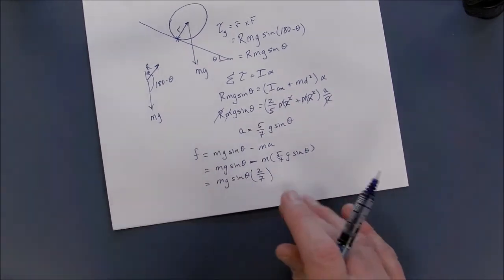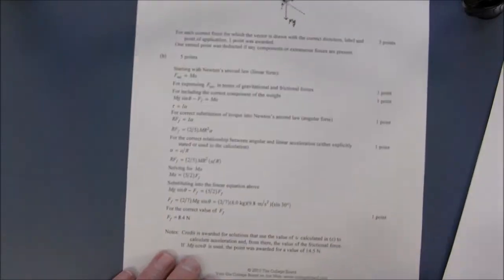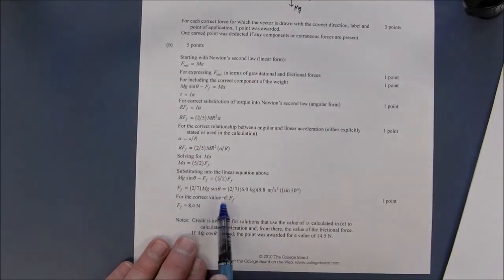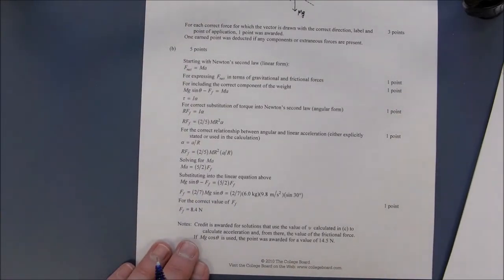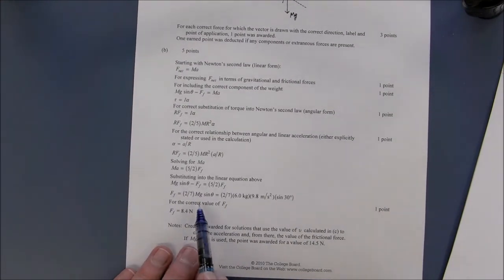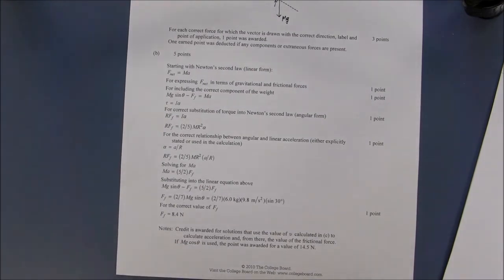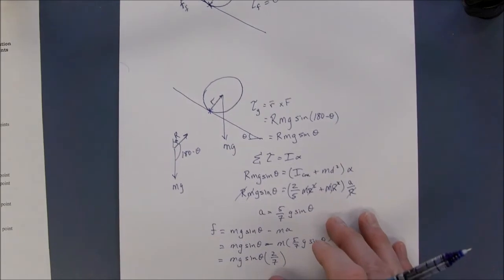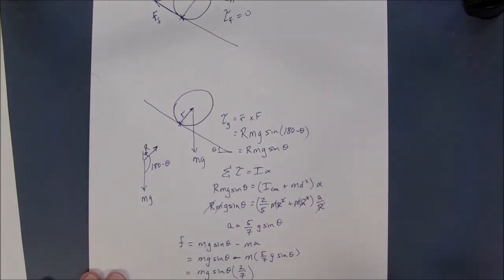And that is the same answer that they got using the wrong way of calculating the torque with the force of friction. So I just have issue with the fact that they didn't use the actual pivot, and they used the center of mass as the pivot, which is incorrect. So you end up with the same answer, but this is the proper way of going about doing it.